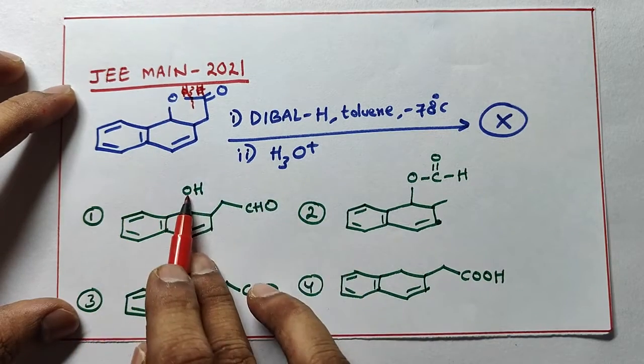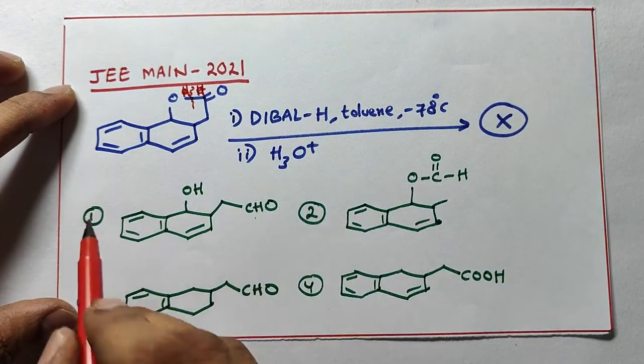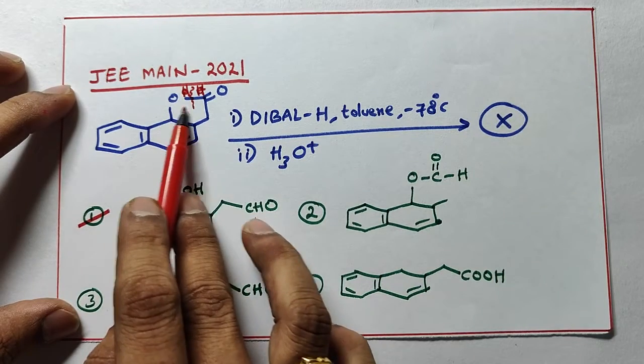Then what is the correct option? It becomes OH, it becomes CHO. That's why option one is correct. This is lactone, the cyclic ester converted into CHO and OH functional group.